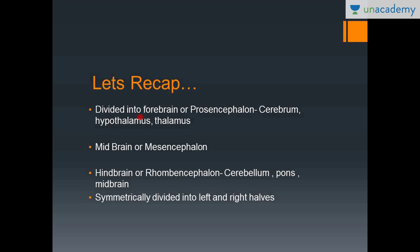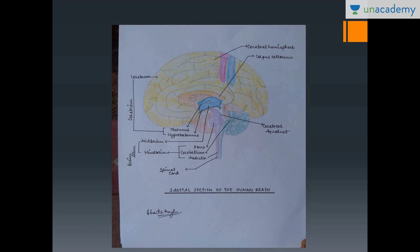So it's divided into the forebrain or the prosencephalon — this is a recap from my previous lesson — which contains the cerebrum, the hypothalamus and the thalamus; the midbrain or mesencephalon; the hindbrain or rhombencephalon, which contains the cerebellum, pons and the medulla oblongata. It is symmetrically divided into the left and right halves.